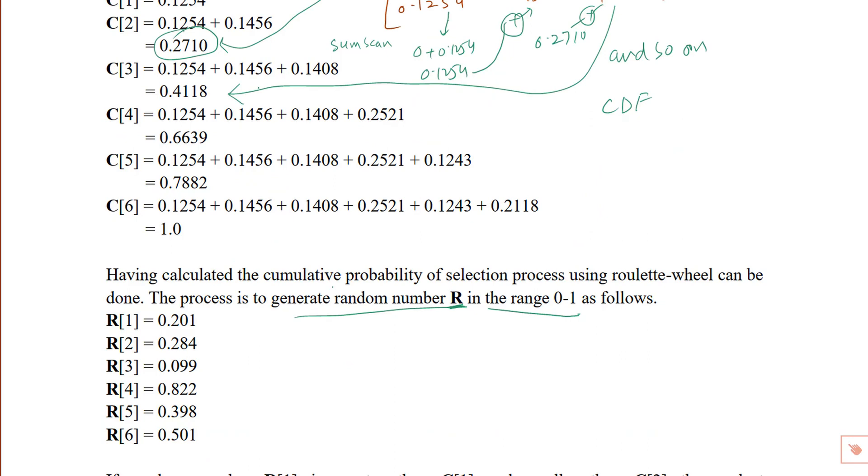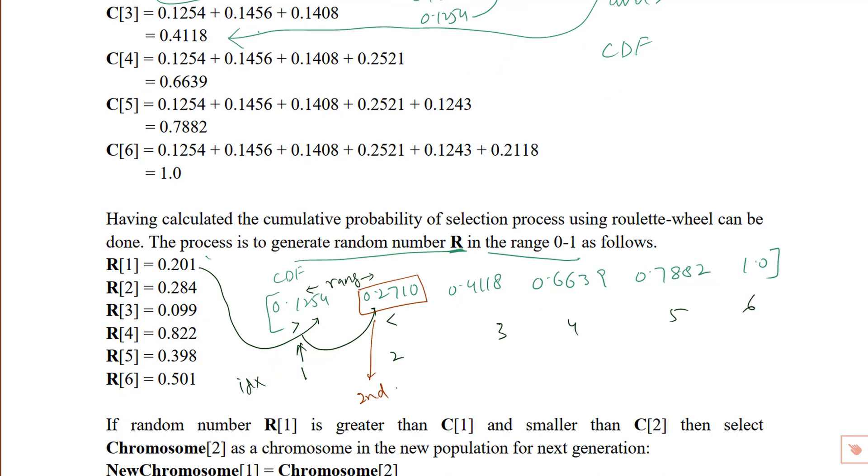Now for selection from the CDF, we have six random tosses and where the tosses lie decides which chromosome will carry to the next generation. For example, if R1 is 0.201, which is greater than 0.1254 and less than 0.2710, then it lies in this range. So the range is this one and chromosome 2 is selected. It means the first individual in the next generation will be the current chromosome 2. Similarly, for R4, chromosome 6 will be selected and so on.